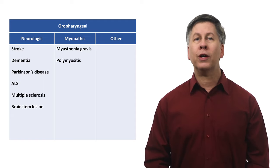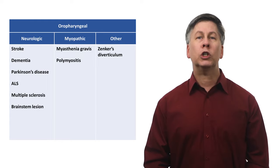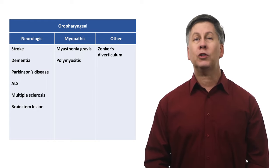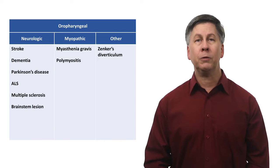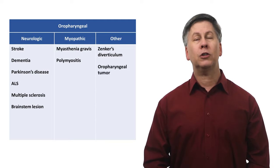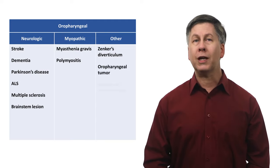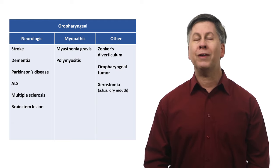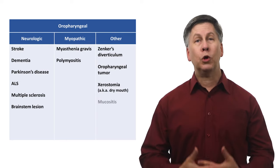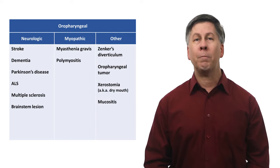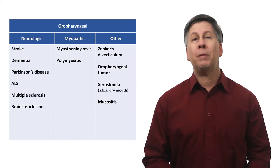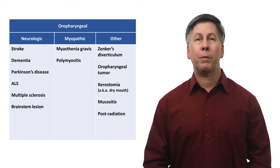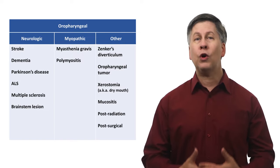Etiologies in the other category include something called a Zenker's diverticulum, which is an outpouching of mucosa at the junction of the posterior pharynx and upper esophagus, just proximal to the upper esophageal sphincter. A variety of oropharyngeal tumors can lead to dysphagia. Dry mouth, known more formally as xerostomia, which can be a symptom of an autoimmune disease, a medication side effect, or be idiopathic. Mucositis, which is inflammation of the mucous membranes of the mouth, which can occur during chemotherapy or radiation treatment, and oropharyngeal dysphagia can be a chronic complication of either radiation therapy or surgery within the oral cavity or pharynx.